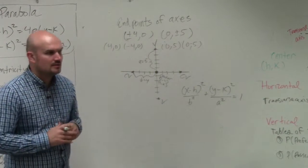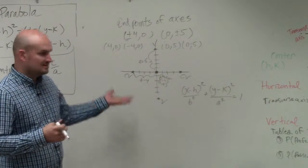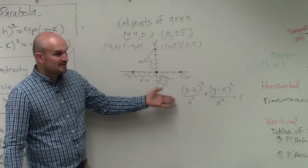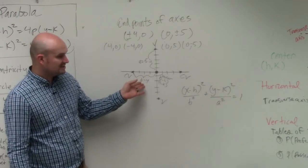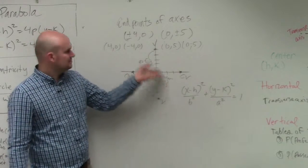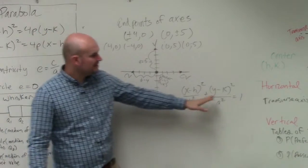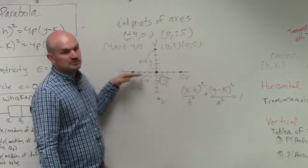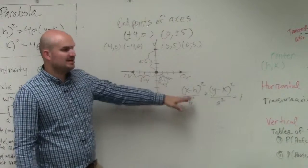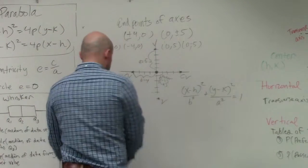Well, do we already know what h and k are? Yeah, 0 and 0. Do we know what b is? b is always smaller than 4. Or b is always smaller than a, so that's 4. a is always larger than b. That's 5. Since it's vertical, we know that a goes under the y. If this was a horizontal major axis, then it'd be under the x. So now you just plug in your information.